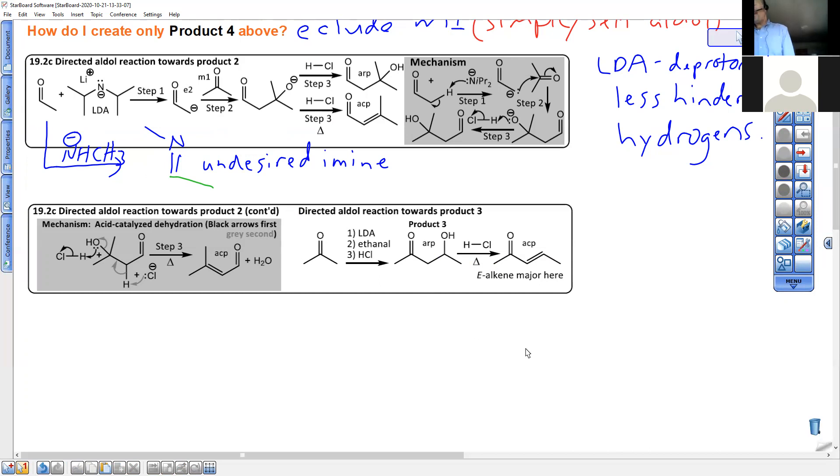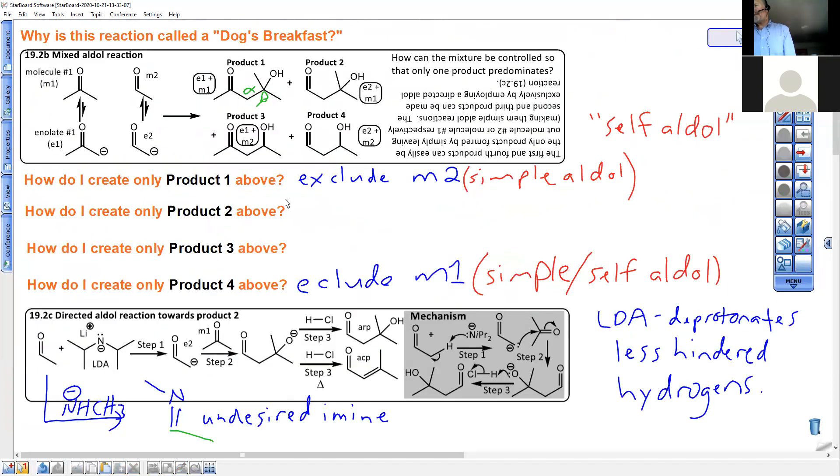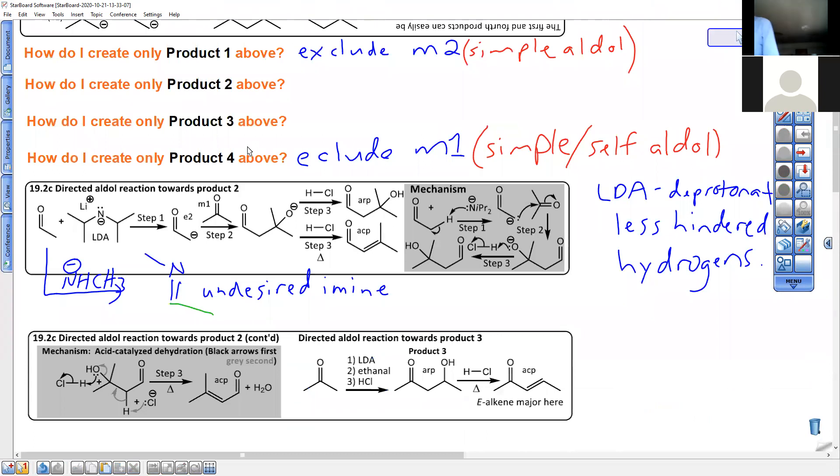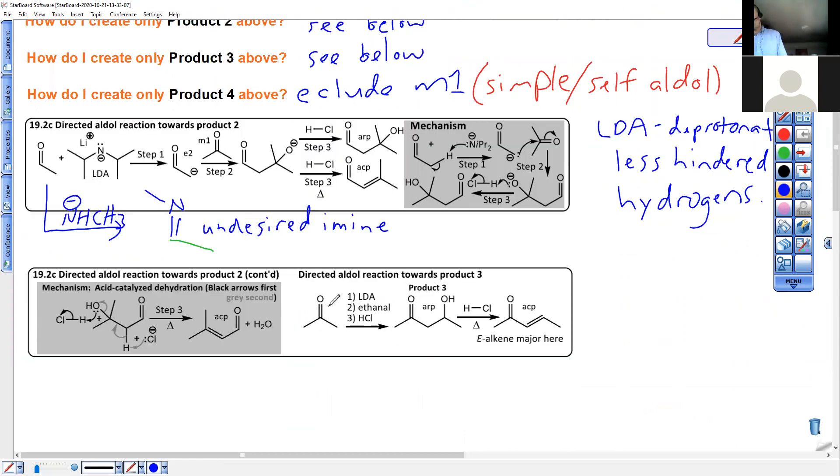If you want to know how to make product three, it's quite simple. Product three, I want this to be the enolate. This species here I need, and I need it exclusively. I do not want competing enolates. So I'm going to take acetone and react it with our new friend LDA. And then I'm going to react it with this aldehyde in step two. And then I'm going to protonate it to make product three.